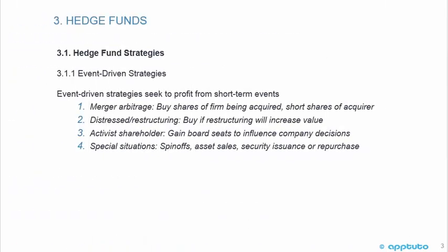The first hedge fund strategy is an event-driven strategy, which seeks to profit from short-term events. One example is merger arbitrage: you buy shares of the firm being acquired and short shares of the acquirer, because research has shown that the acquired firm's price generally increases while the acquirer's price decreases. A second example is distressed restructuring — you buy if restructuring will increase value. Third is activist strategies, where shareholders gain board seats to influence company decisions. Fourth is special situations such as spinoffs, asset sales, security issuance, or repurchase.